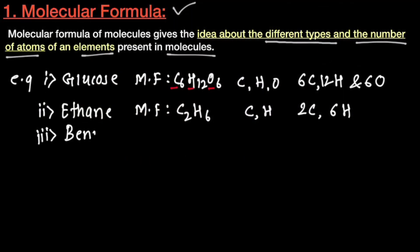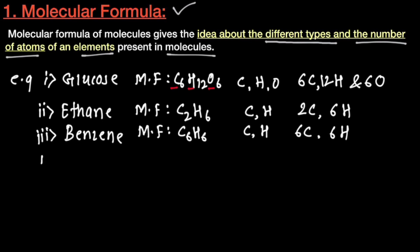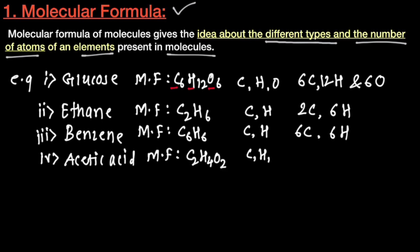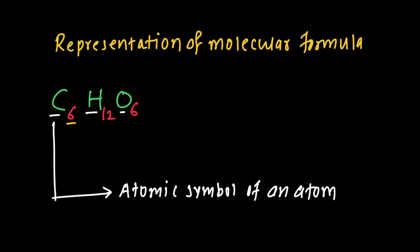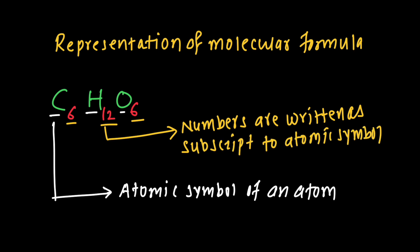The molecular formula of benzene is C6H6, containing carbon and hydrogen. For acetic acid, its molecular formula is C2H4O2, with 2 carbon atoms, 4 hydrogen atoms, and 2 oxygen atoms. We can conclude that molecular formula gives an idea about the number of different atoms present in a molecule, represented using atomic symbols with subscript numbers.